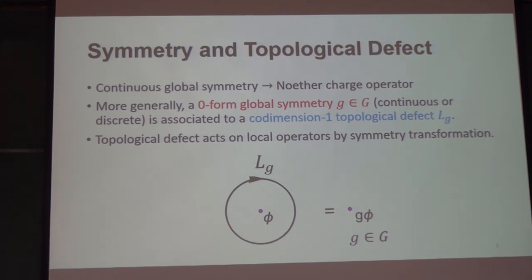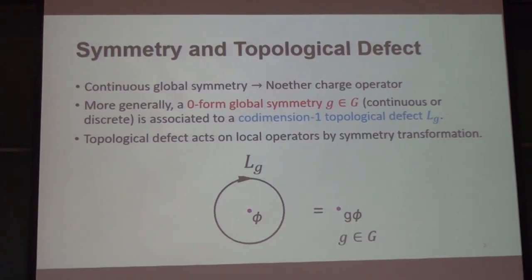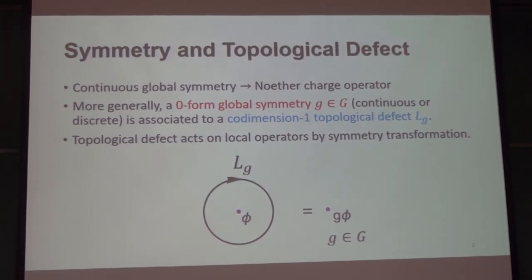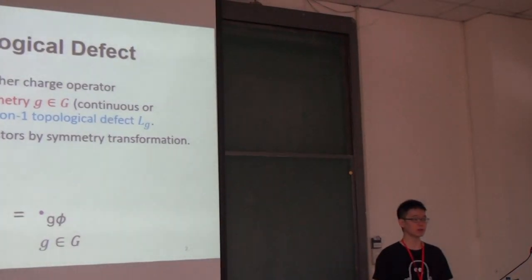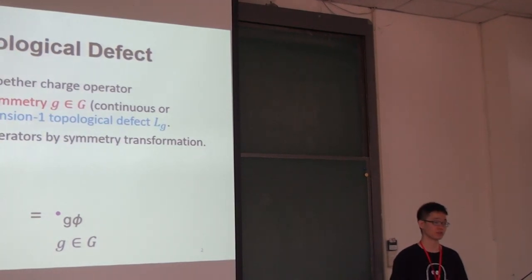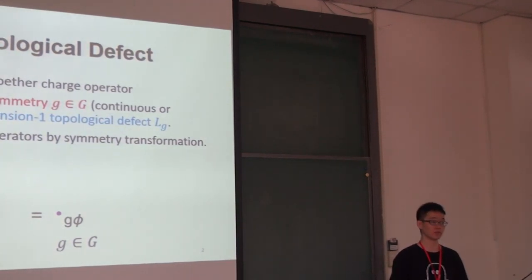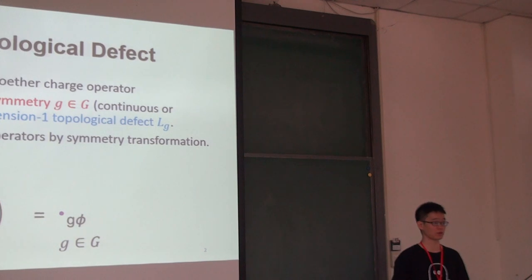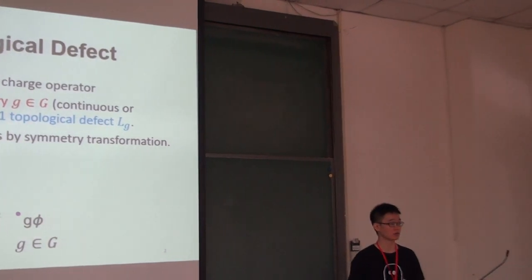When you say topological — if it were the Noether charge, you would integrate over the contour, so topological would mean you could do homology, connect and reconnect. Is that what you mean by topological? That's actually not quite right. In the case of the Noether current, indeed, you can connect and reconnect. But for more general topological defects, that might not be the case. That's actually a very important distinction between topological defects associated to global symmetry and the more general ones.